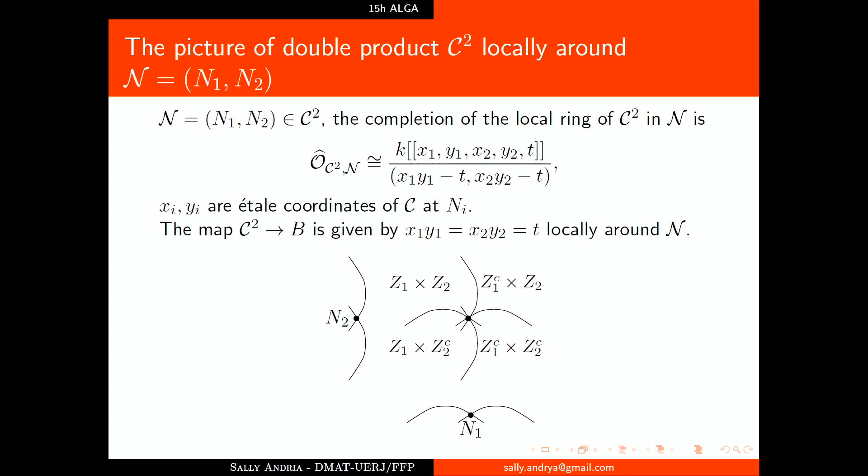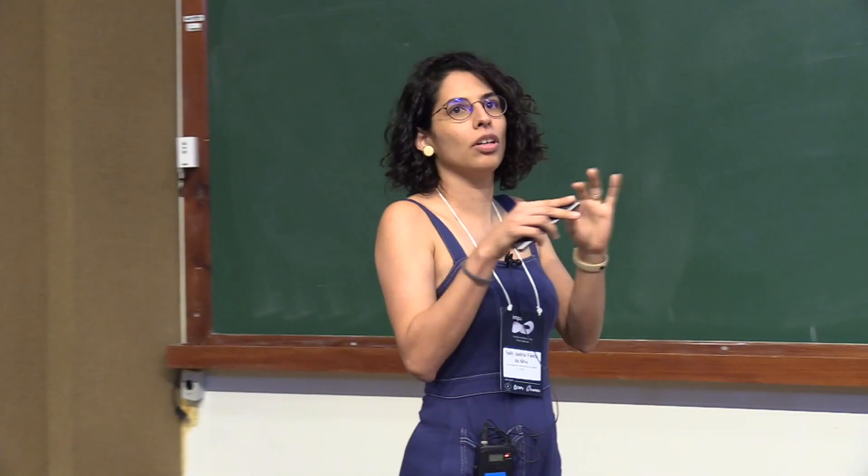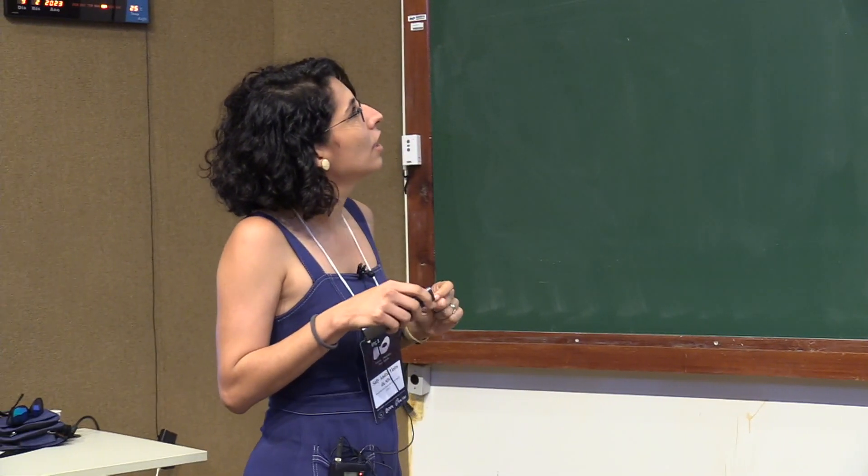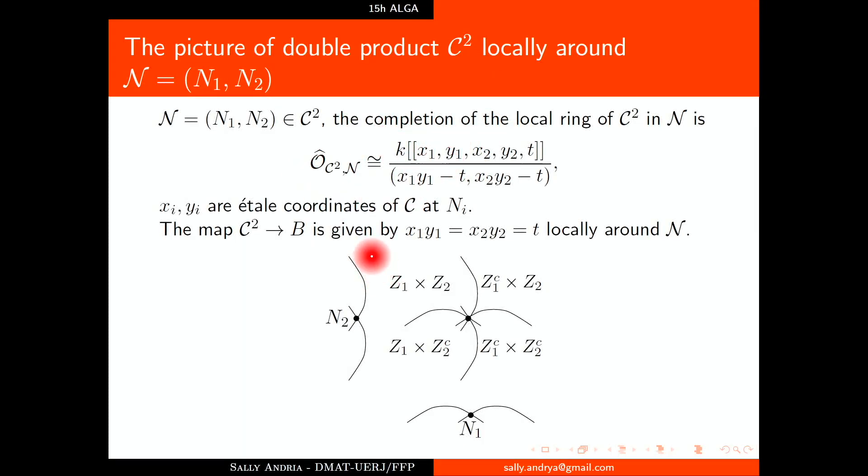Let's look at our example: the degree 2 Abel map. What happens when we choose all the entries as nodes? We have this completion of the local ring, and the map is given by these equations. We have this tangle of nodes here, and what we usually do to resolve this—